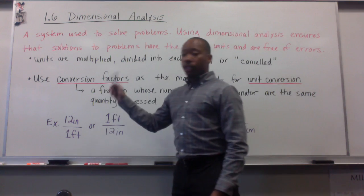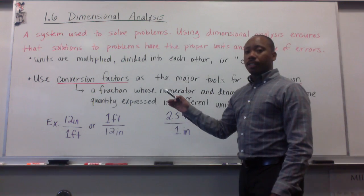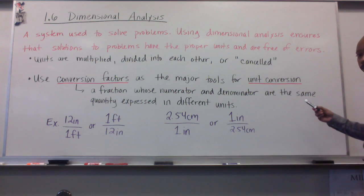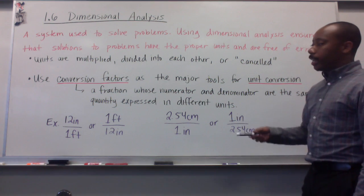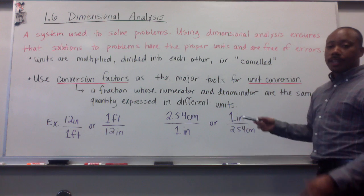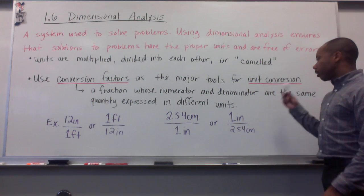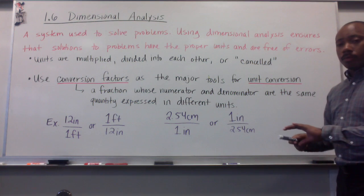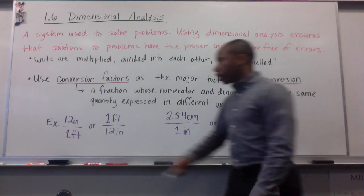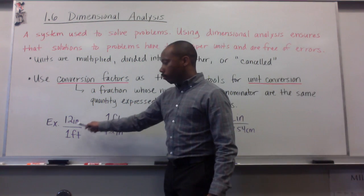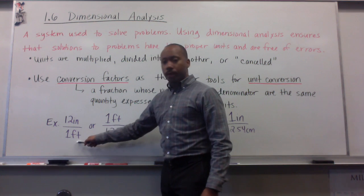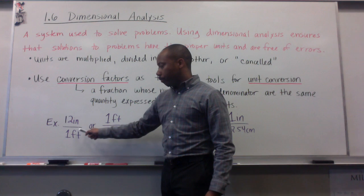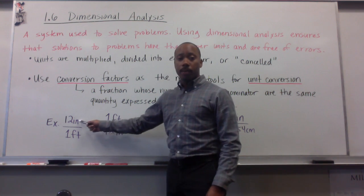In dimensional analysis, we use conversion factors as the major tools for unit conversion. A conversion factor is a fraction whose numerator and denominator are the same quantity expressed in different units. For example, 12 inches in the numerator, 1 foot in the denominator. They mean the same thing, but they have different units. The same quantity, but different units.